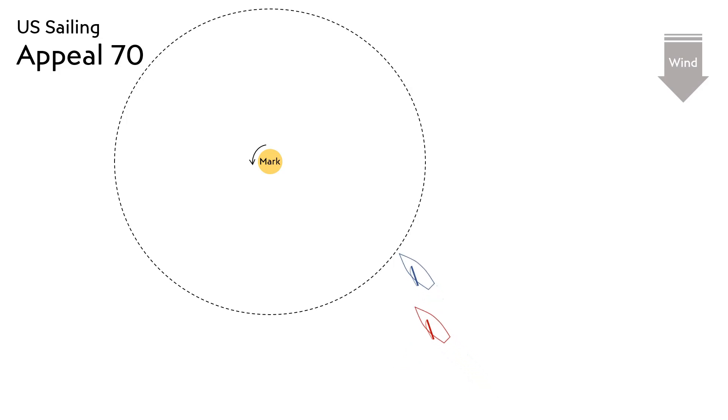Before either of the boats reached the zone, the red boat became overlapped very close to leeward of the blue boat. The boats remained overlapped as they reached the mark, where the red boat was forced to bear away to avoid touching the mark.